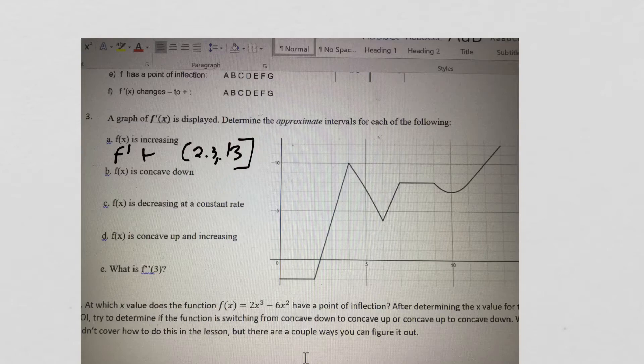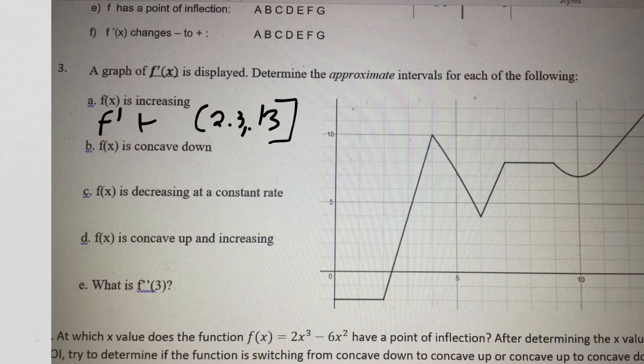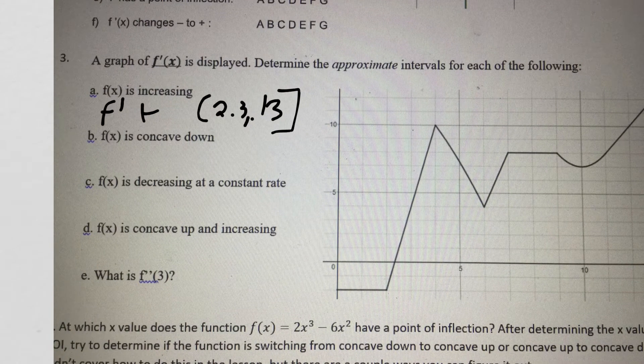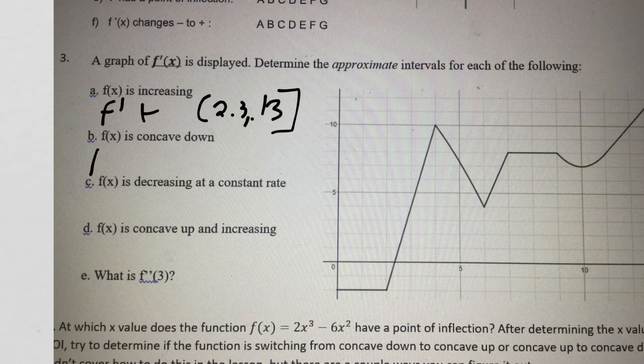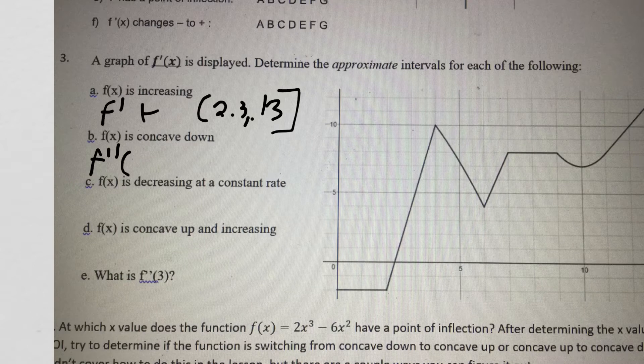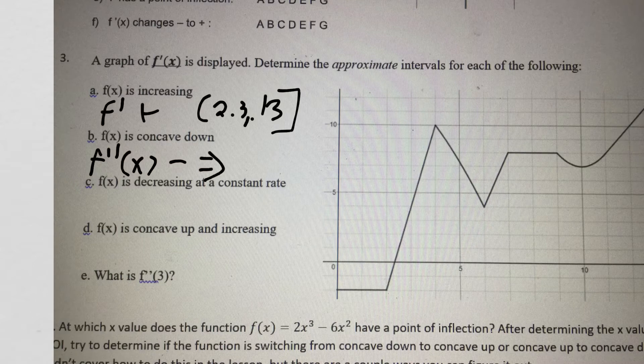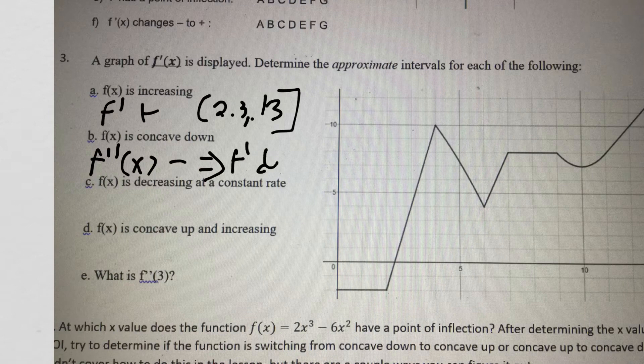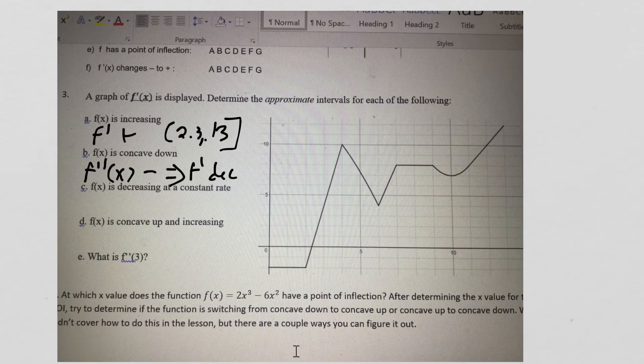f of x is going to be concave down when f double prime is negative, which means that f' is decreasing. So where is f' decreasing?